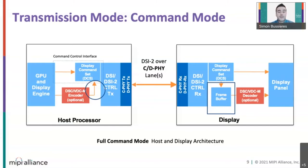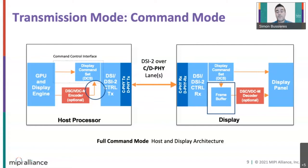Video data, whether compressed or not, is transmitted using generic writes through the control interface. On the display, the video data is written to the frame buffer as memory. The memory is also usually compressed. Partial updates of the frame buffer are also supported to avoid retransmission of static image areas.